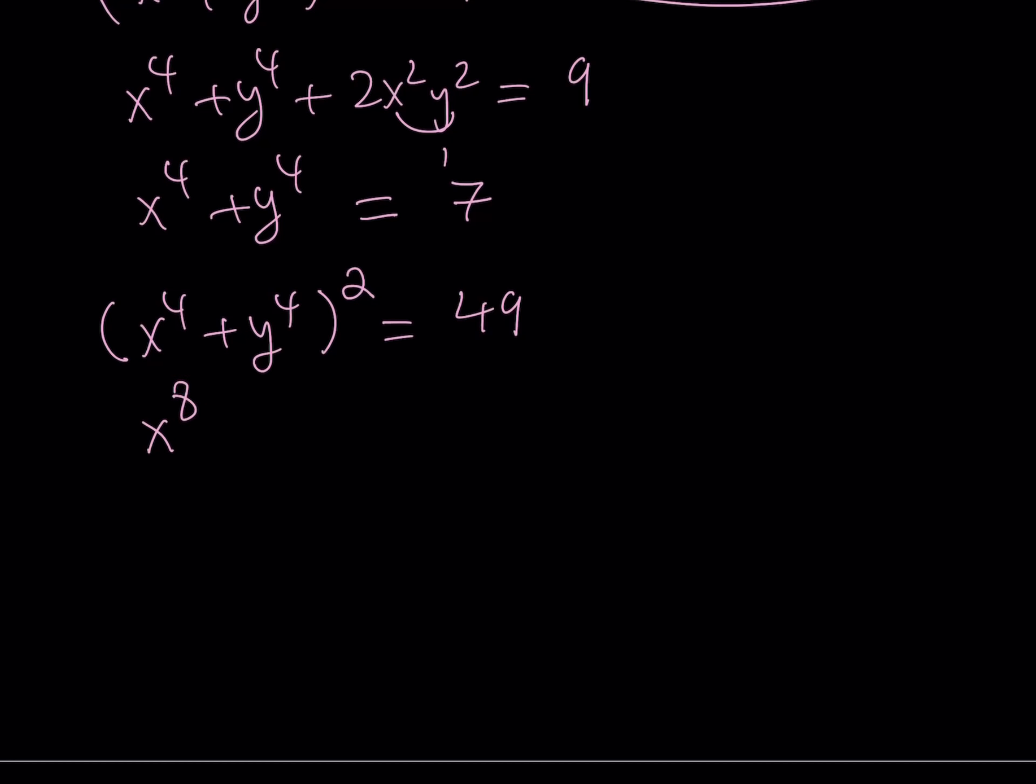And on the left-hand side, we get x to the 8th plus y to the 8th plus 2x to the 4th, y to the 4th, equals 49. As you know from before, this is equal to 1, and 2 times 1 equals 2.